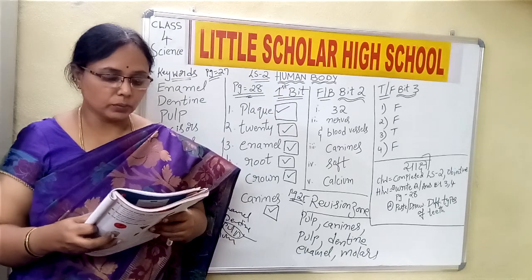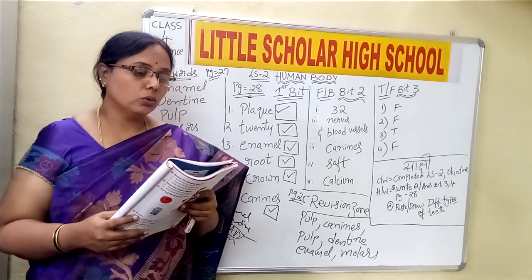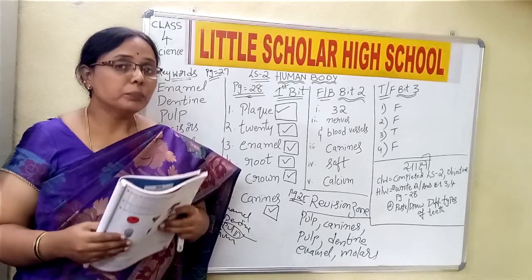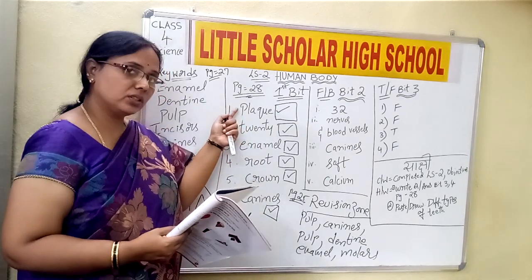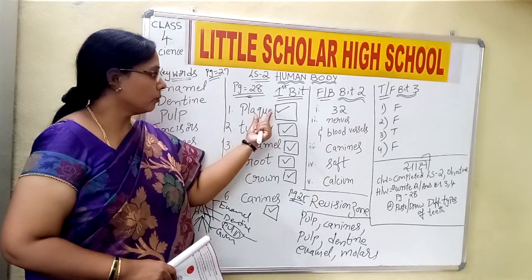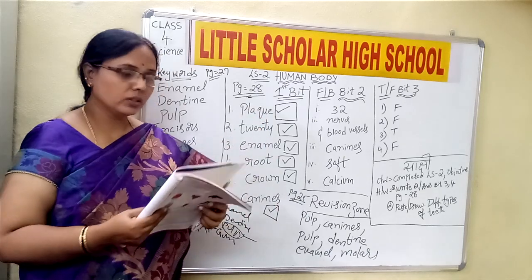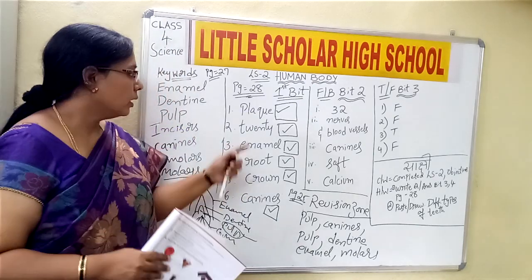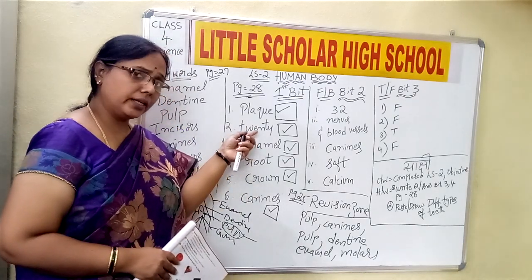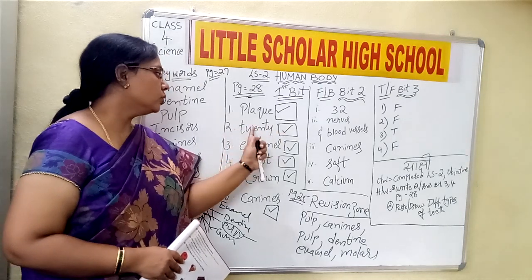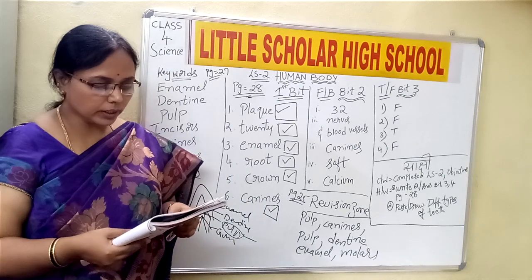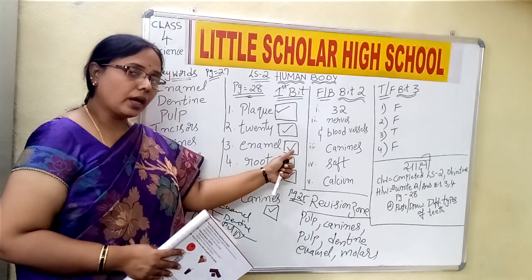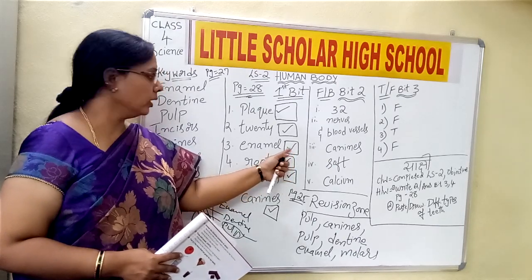The first question is: over a period of time our teeth get covered by a sticky yellowish substance called plaque. The option is plaque, so please put a tick mark beside plaque. Second: a three-year-old boy has 20 teeth, so put a tick mark for 20. Third: the hardest part of the tooth is the enamel, please put the correct tick mark for enamel.